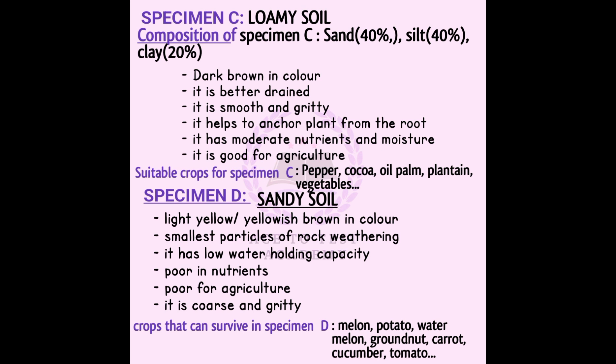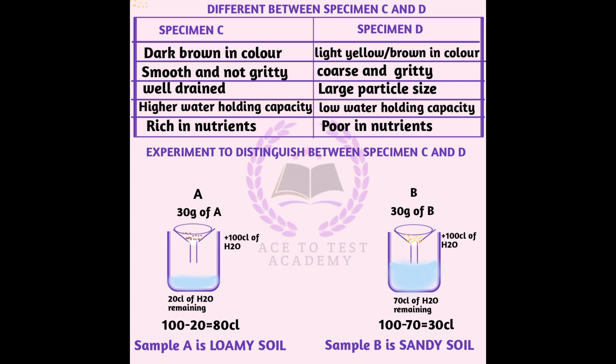Some crops can also survive in specimen D — sandy soil — like melon, watermelon, and tomato. The distinction between specimen C (loam soil) and D (sandy soil): loam soil is dark in color while sandy soil is light yellow; loam soil is smooth while sandy soil is coarse and gritty; loam soil is well drained while sandy soil is not well drained and has large particle size; loam soil has high water capacity while sandy soil has low water capacity; loam soil is rich in nutrients while sandy soil is poor in nutrients.